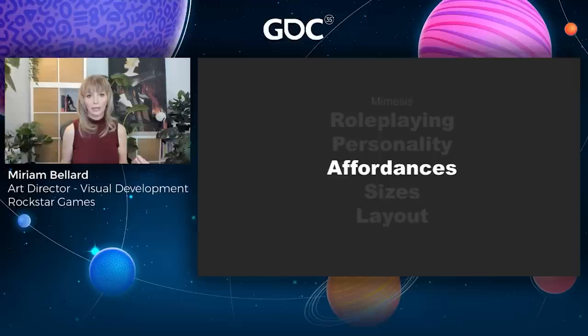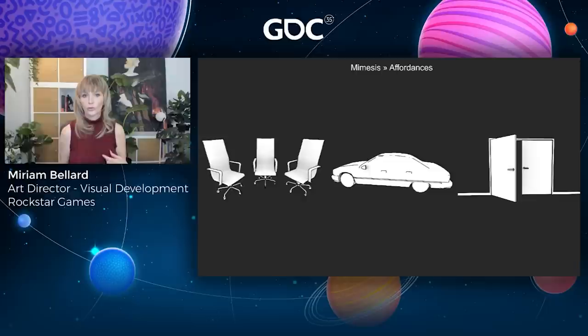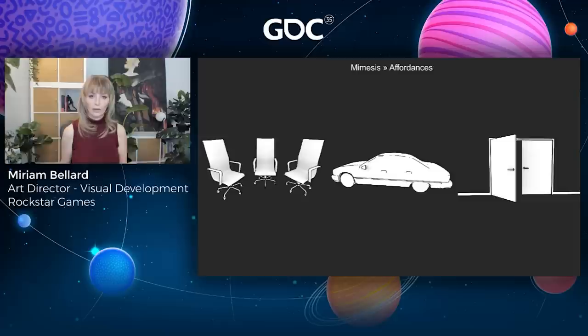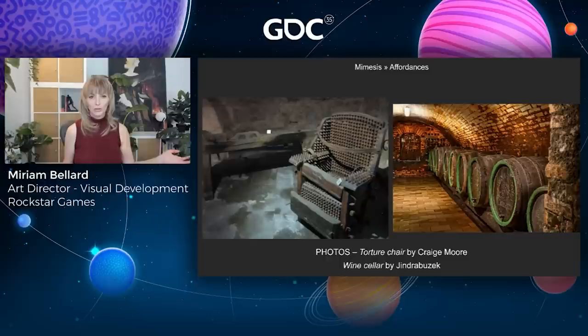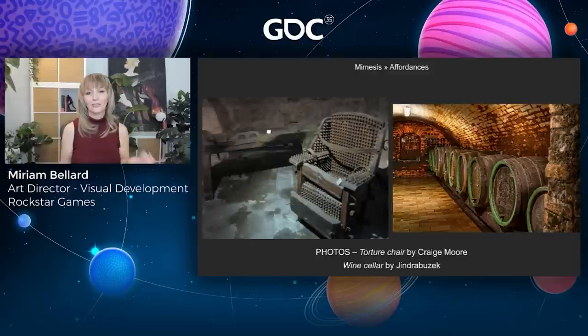Next under mimesis, we have affordances — the actions that an object allows. A chair affords sitting, a car affords driving, a door affords opening. We normally think about affordances in terms of interactivity and gameplay, but affordances have storytelling components as well. For an extreme example: if you have a cellar with a torture chair versus one with wine barrels, the storytelling is going to be very different — even if neither object is actually functional in your game. It's the affordances from the real world that are adding the storytelling.